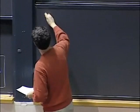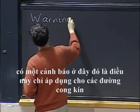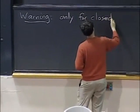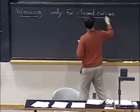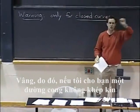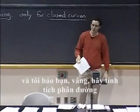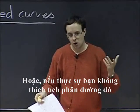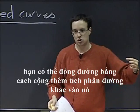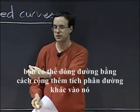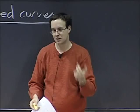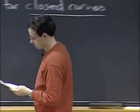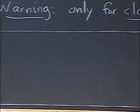There's an important warning: this is only for closed curves. If I give you a curve that's not closed and ask you to compute the line integral, you have to do it by hand — you have to parametrize the curve. Or, if you really don't want to do that line integral, you could close the path by adding another line integral and then compute using Green's theorem. But you can't use Green's theorem directly if the curve is not closed.